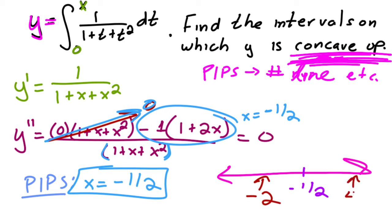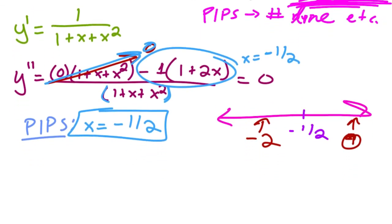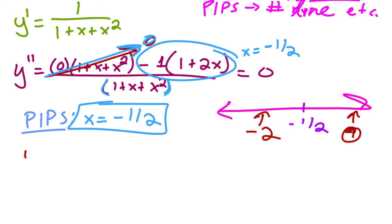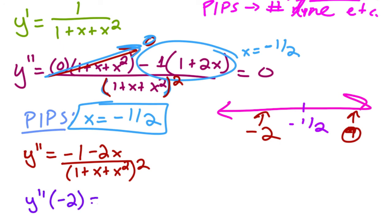Okay, so now I got my number line: negative one half. And I'll test some points. How about negative two and zero? It's much easier to do zero. All right, so I'm going to plug it into the second derivative. Now let me simplify this a little bit. So y double prime is equal to negative one minus two x. Oh my goodness, I totally forgot the squared down here, sorry. When I did the quotient rule, terrible, terrible, terrible, but I caught my mistake so that's okay. All right, over one plus x plus x squared squared. Almost forgot it again.